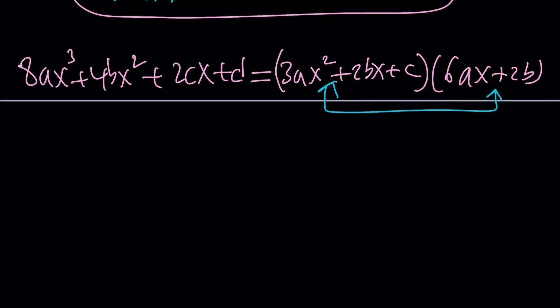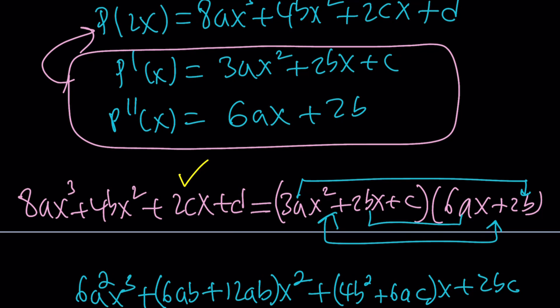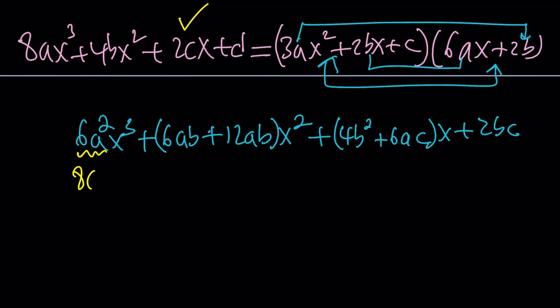Therefore, let's go ahead and distribute here. We get 6a squared x cubed. And then for x squared, we're going to get x squared from two different places. One of them is this one, 6abx squared plus the other x squared is going to come from here, which is 12abx squared. So let's go ahead and put that as the coefficient of x squared. Let's go ahead and take care of x. The coefficient of x can only come from x times a constant. So it's going to be 4b squared plus 6ac. That's the coefficient of x. And our constant is going to be 2bc. Now, let's go ahead and set that equal to P of 2x, which is this one. And now we're going to get the following. This is going to be 8a. This is going to be 4b. This is going to be 2c. And this is going to be d.